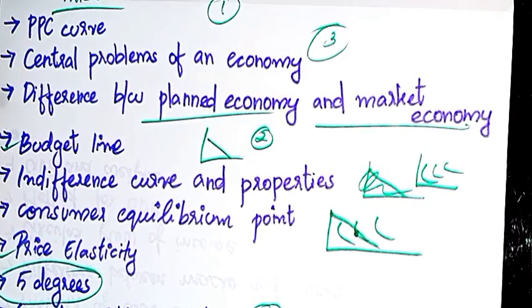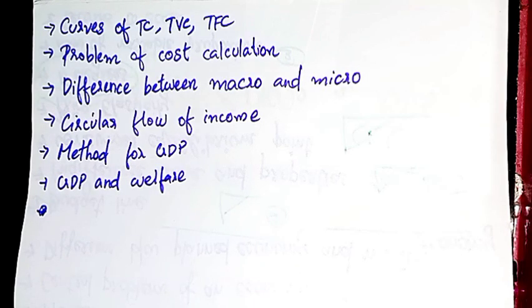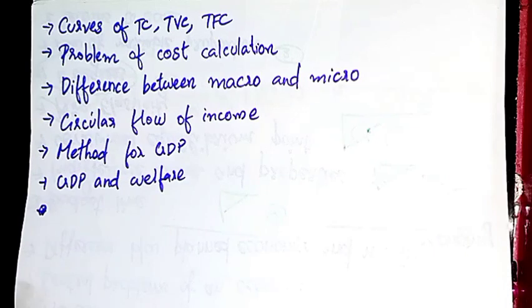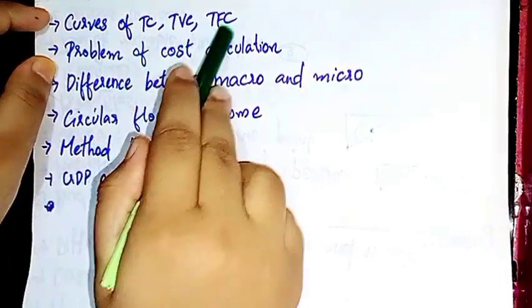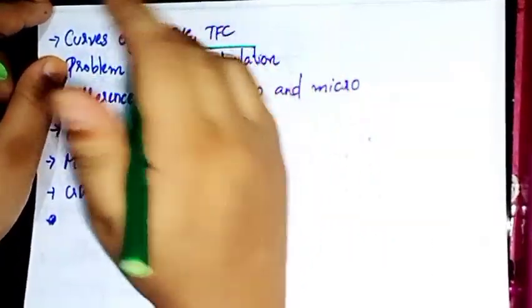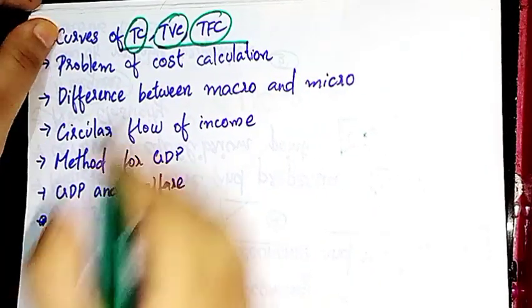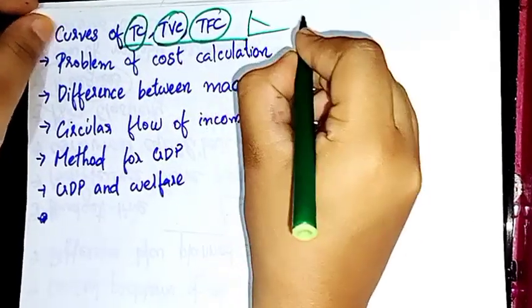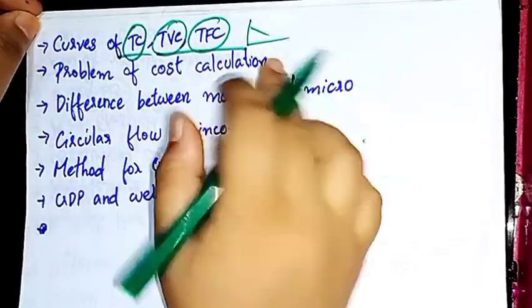Then in the third chapter I will go to law of variable proportion. I will do a separate video. Then next in the third chapter, TC, TVC, TFC. We will upload separate video. I will put the link in the description. But if you have questions for the third chapter cost calculation, we will take a look at that.